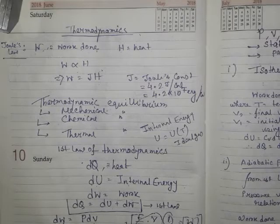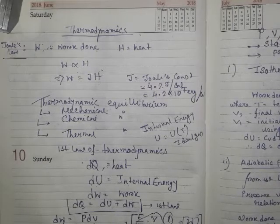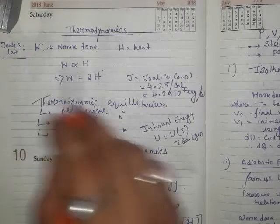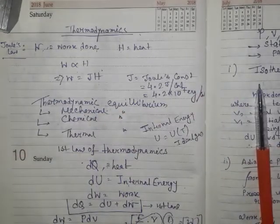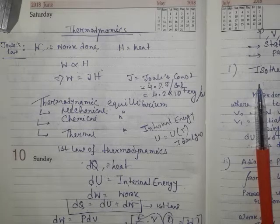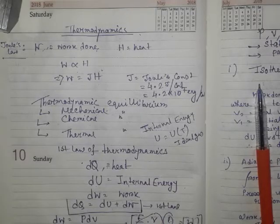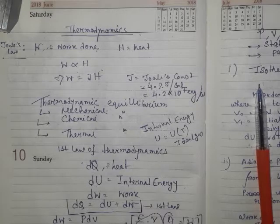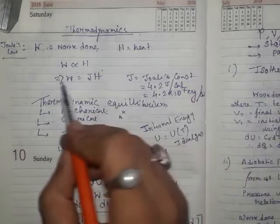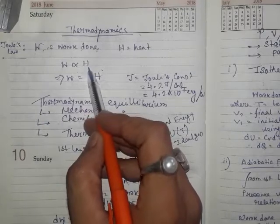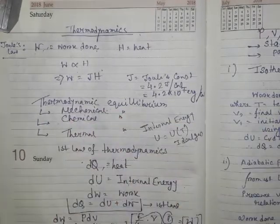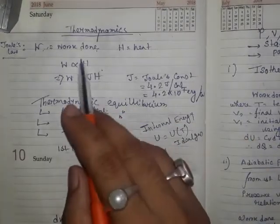So let's start with a basic law called Joule's law. It says that when some work has been done and this work is converted into heat, the amount of heat produced due to this work is exactly proportional to the amount of work done.